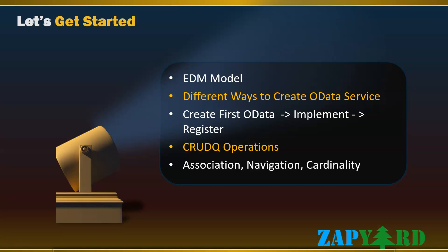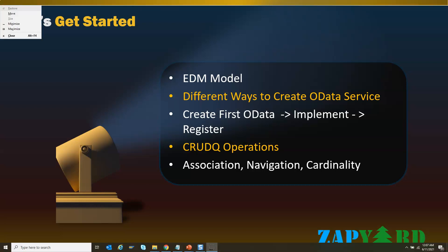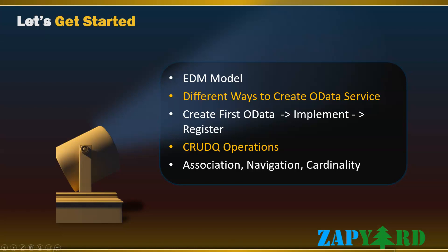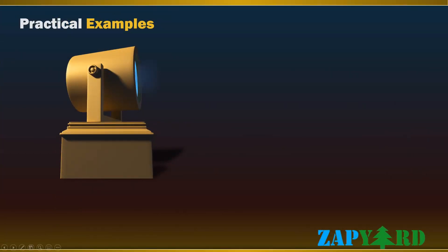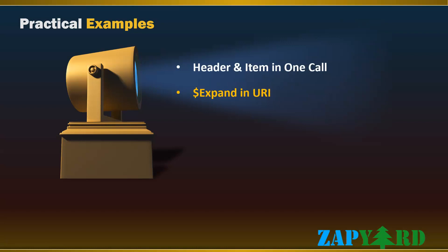We will also learn the usages of associations, navigations, and cardinalities of OData with practical examples. We will check how to get both header and item data in a single call, and cover examples involving entity navigations like using $expand in the URI.